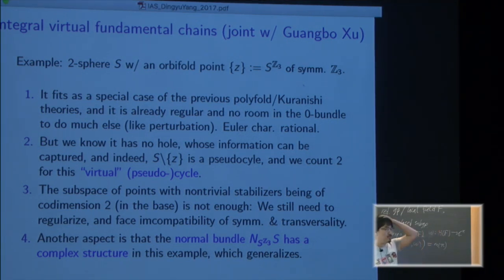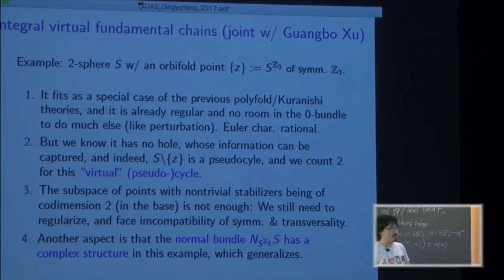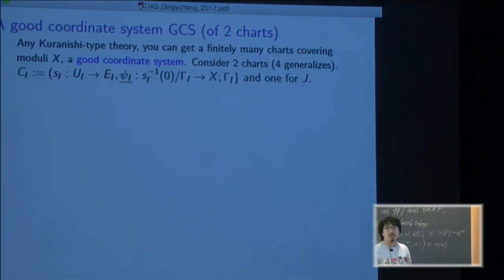If you try to generalize from this example you say okay, the space of non-trivial stabilizer has codimension two or higher, maybe that's the condition, but that's not enough because you still have the symmetry and transversality go against each other. But another feature is here that the normal direction of the stabilizing portion inside the whole space has a complex structure and that generalizes. Okay let's quickly go over what Kuranishi's theory is about.